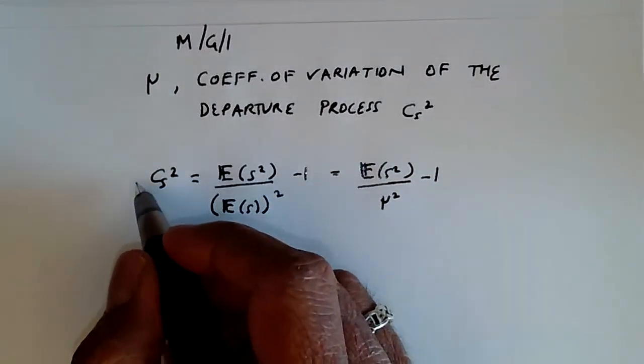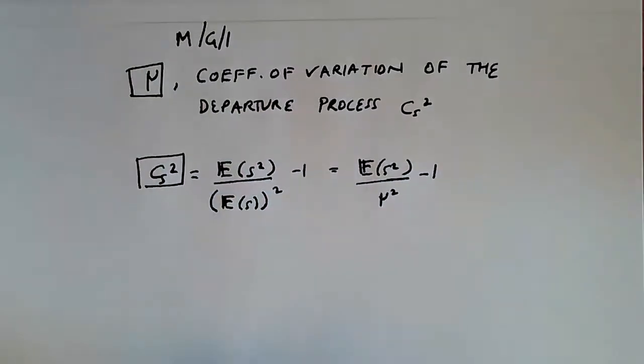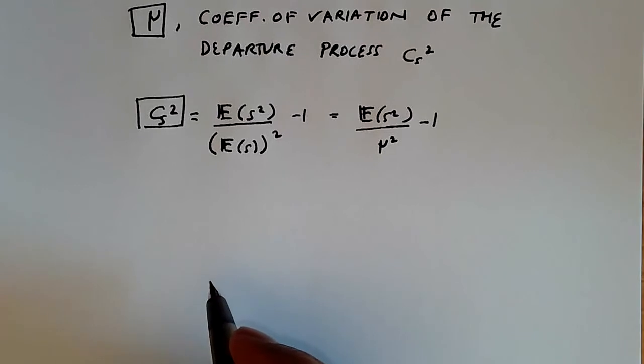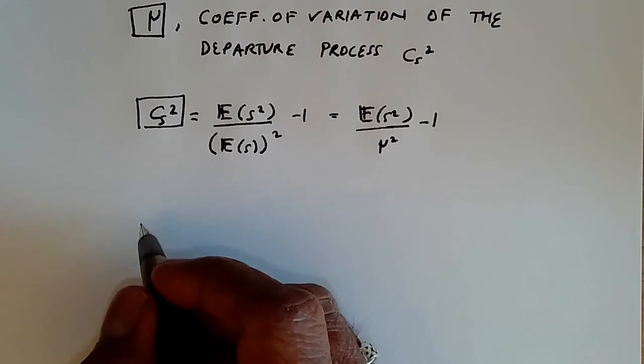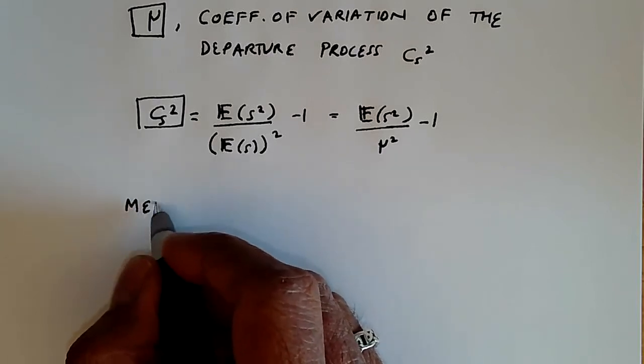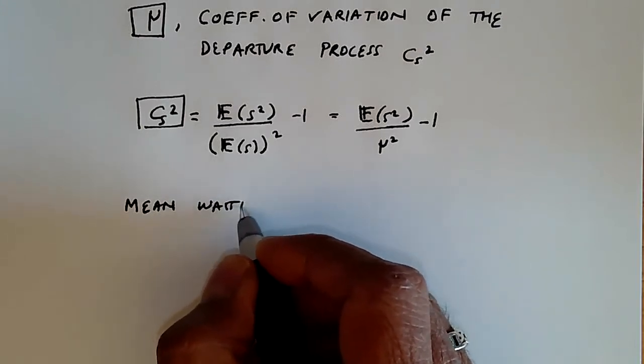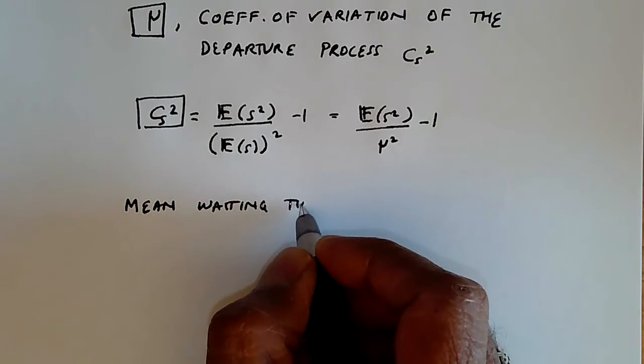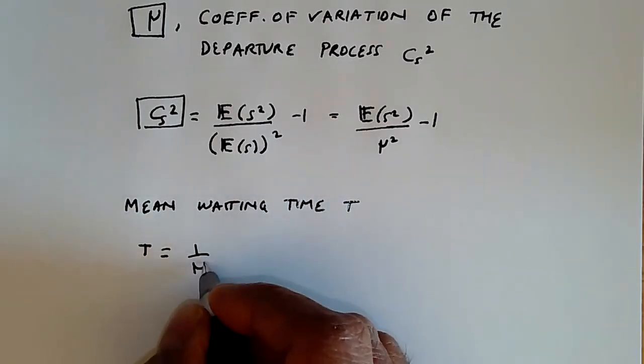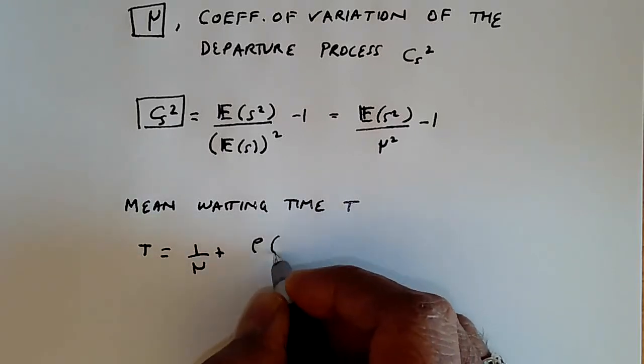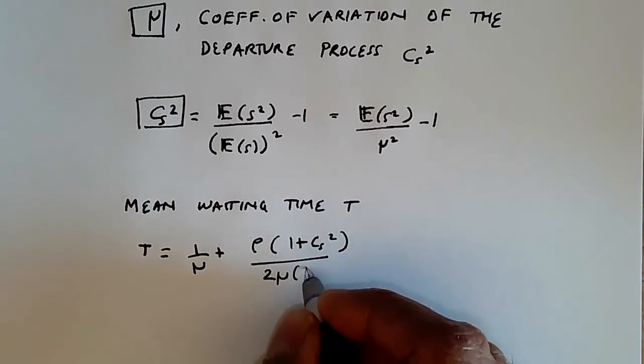If we are given μ and the coefficient of variation C_S squared, then we can compute two properties for the M/G/1 queue. The first is the mean waiting time T, given by T = 1/μ + ρ(1 + C_S²) / (2μ(1 - ρ)).